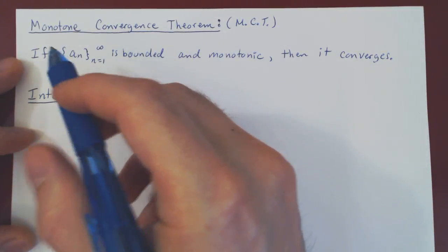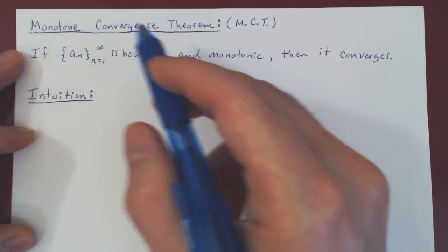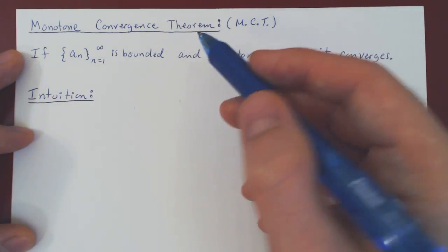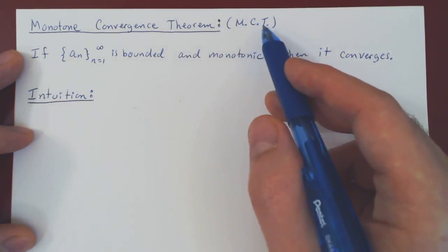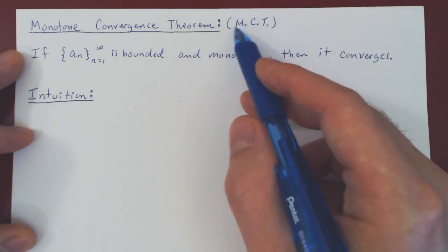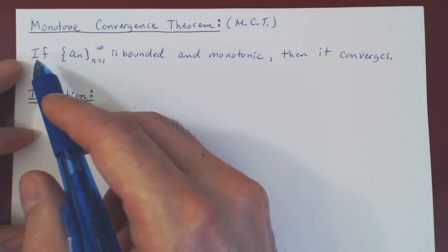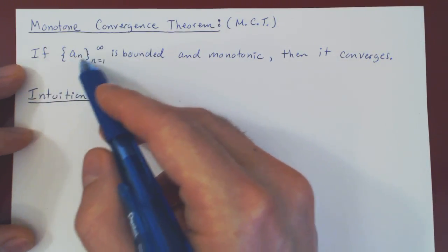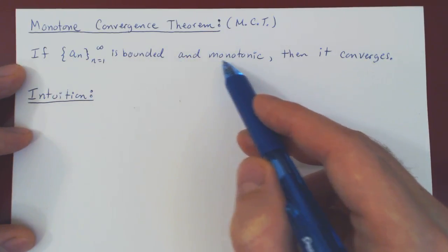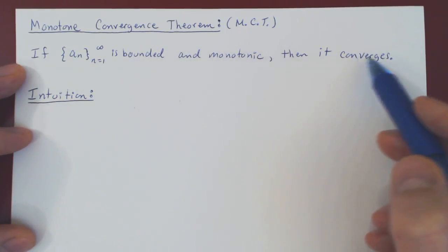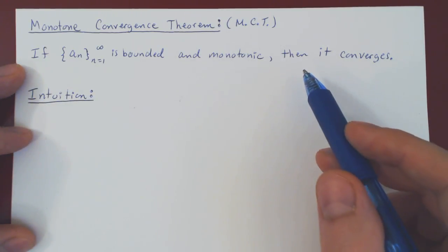In this video, we will look at the so-called Monotone Convergence Theorem, and from now on we will be referring to this theorem as MCT, the Monotone Convergence Theorem. The statement is very simple: if a sequence A_N is bounded and monotonic, then it must converge. So very simple, but very useful result.